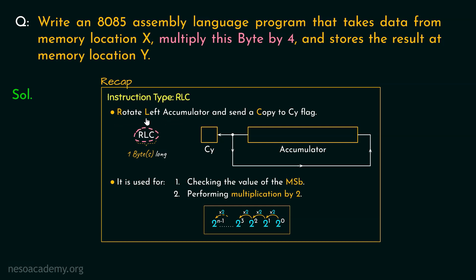But in this case we are supposed to multiply the data byte by 4. Using RLC, the 8085 microprocessor rotates the content of the accumulator towards the left — in other words, execution of RLC shifts the contents within the accumulator towards the left by 1 bit. Shifting the bits left one time means multiplication by 2, therefore shifting it twice means multiplication by 2 × 2 = 4. So all we have to do is execute the RLC instruction twice.